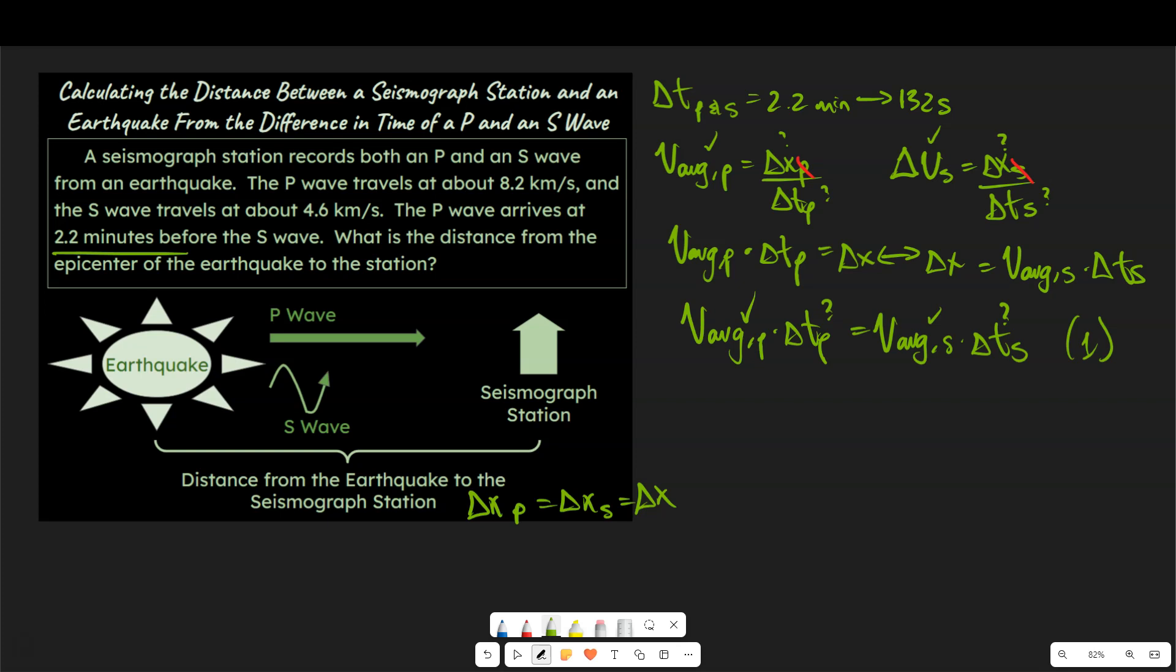We do know that the difference in time for the two waves is 132 seconds, so let's write that as an equation, and in fact I'm going to give you two options and ask you to decide which version you think makes more sense. So I can say delta T for P plus 132 seconds is equal to delta T for S, or we can say delta T for S plus 132 seconds is equal to delta T for P. And so which, I guess I'll label these as option A and as option B, which do you think makes more sense, option A or option B?